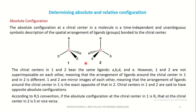Enantiomers are chiral molecules that are mirror images of one another, and the molecules are non-superimposable on each other. Hence, structures 1 and 2 have opposite absolute configurations. According to R and S convention, if the absolute configuration at the chiral center in 1 is R, then that in 2 is S, or vice versa.